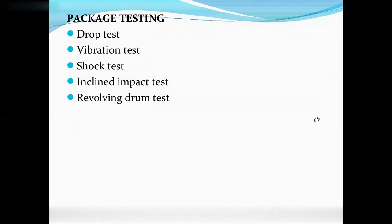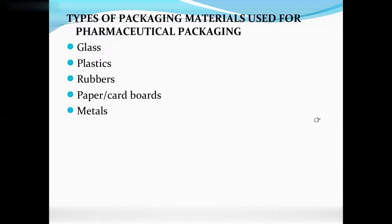The types of packing material used for pharmaceutical packing include glass, plastic, rubber, paper, cardboard, and metals. These are all used as packing materials.